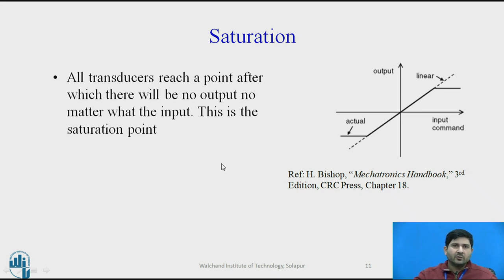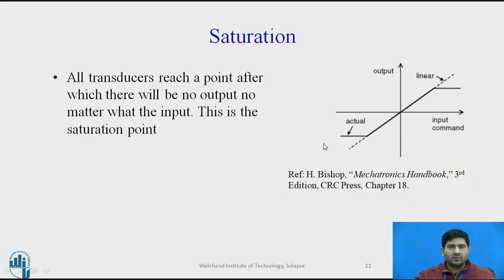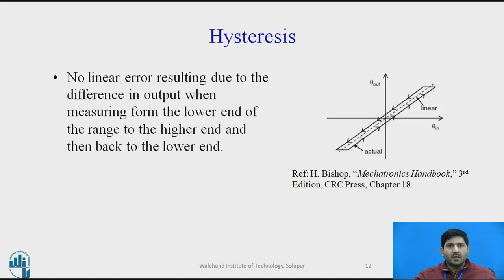One characteristic is saturation. All transducers reach a point after which there will be no further output no matter what the input — this is called the point of saturation. In the linear range of measurement, output responds to input, but beyond the saturation point there is no output regardless of any change in input. The saturation point must be kept in mind when choosing a sensor, as it typically determines the usable range.